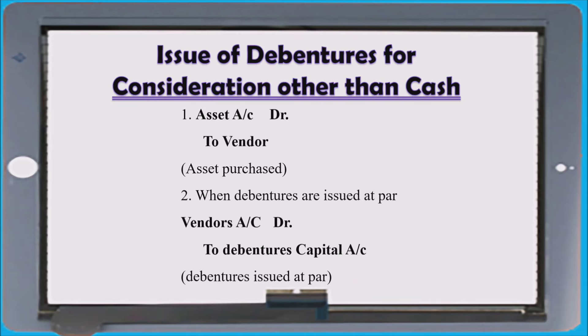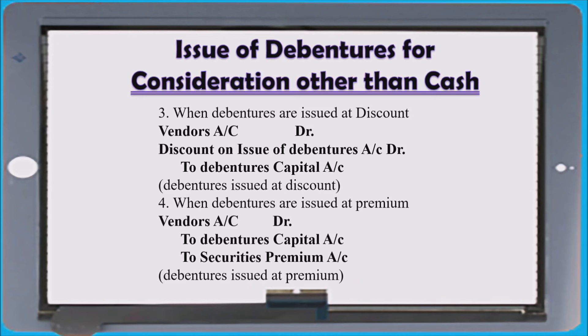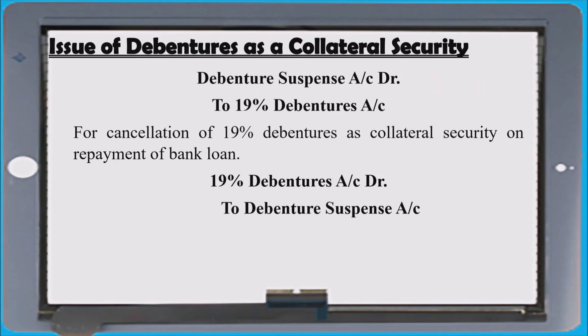There is a possibility for issuing shares or debentures for consideration other than cash. Nowadays questions integrate these topics — issue of shares or debentures for consideration other than cash, connected with six different cases. The due entry will be: asset to vendor when assets are purchased on credit, and vendor to debenture — remember it is debenture, not debenture capital. If issued to vendor at discount: vendor, discount on issue to debenture. If issued at premium: vendor to debenture, to securities premium.